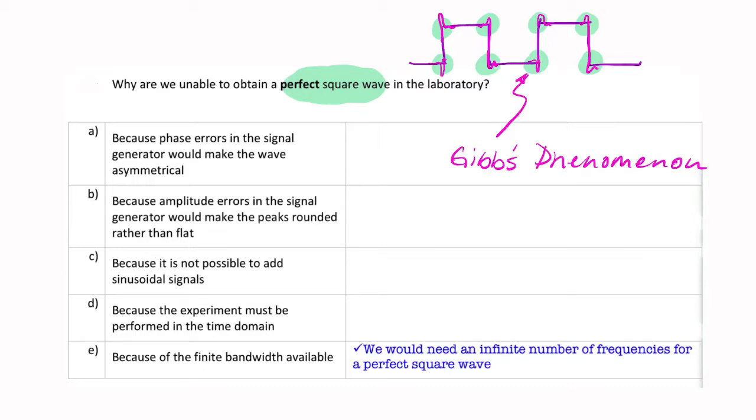Let's go through the reasons one by one. The first one says because phase errors in the signal generator would make the wave asymmetrical. It isn't really about errors—the reason we can't produce a perfect square wave isn't because of phase errors. The same with B, amplitude errors. It's not about having errors causing it to be rounded rather than flat.